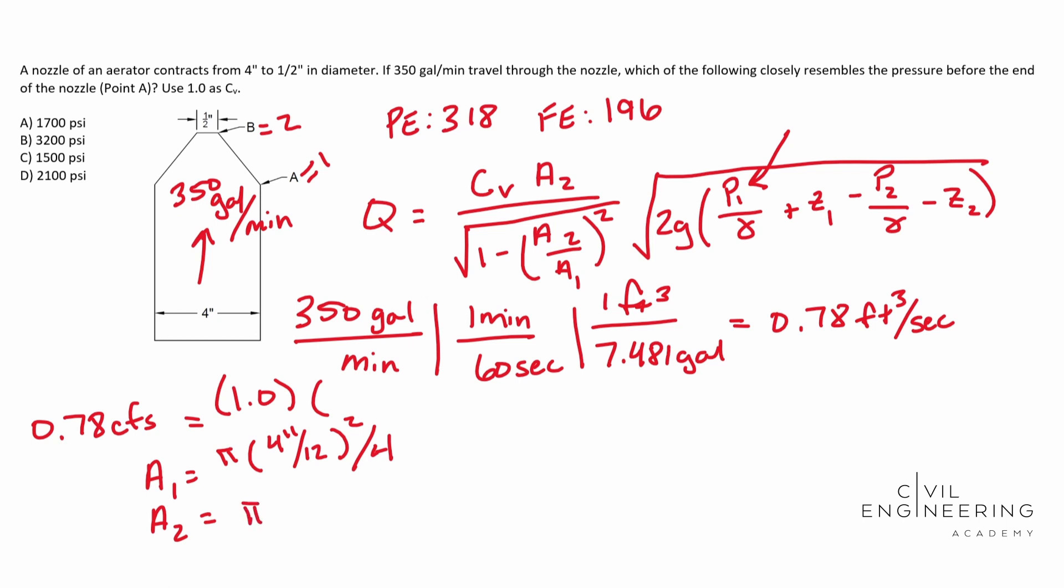So for area two, we're going to do 0.5 inches over 12 and square it and then divide it by four. That's where that guy comes from. Area one ends up being 0.087, 0.087 square foot. And area two ends up being 0.00136. And that is square feet.